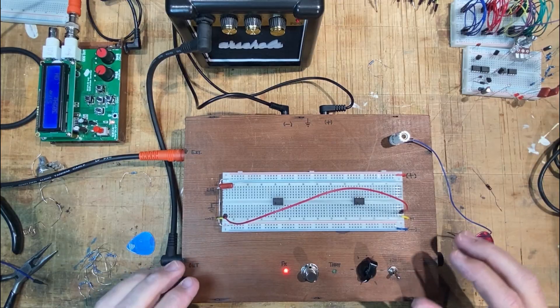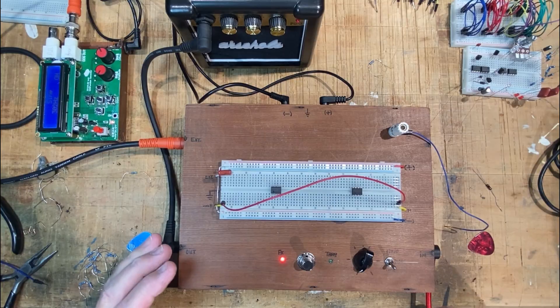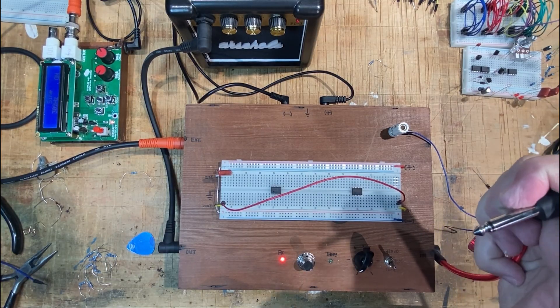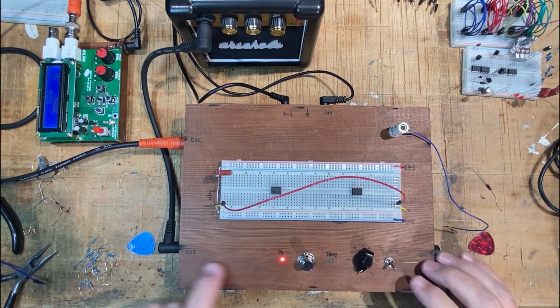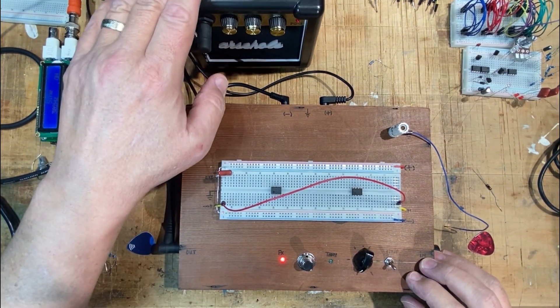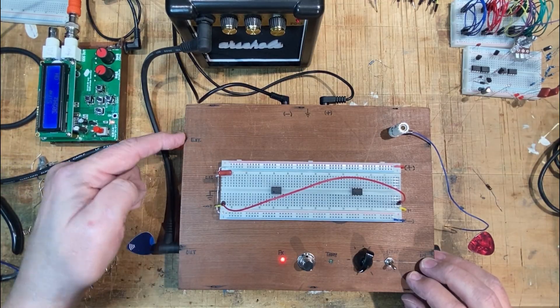Right, so building up the ring modulator, I've got my new test harness here, just giving it a quick buzz test. This is going to be my guitar input. I've got the output going to my test amp, and I've got an oscillator coming in through the external input.